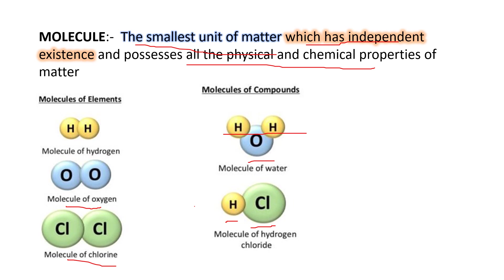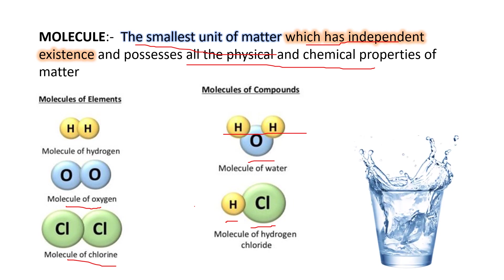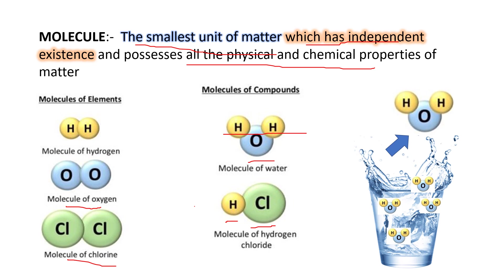For example, consider water. Water is made up of H₂O molecules. All the H₂O molecules will have the same physical and chemical properties. So the smallest unit of matter which has independent existence and possesses all the physical and chemical properties of that matter is called a molecule.